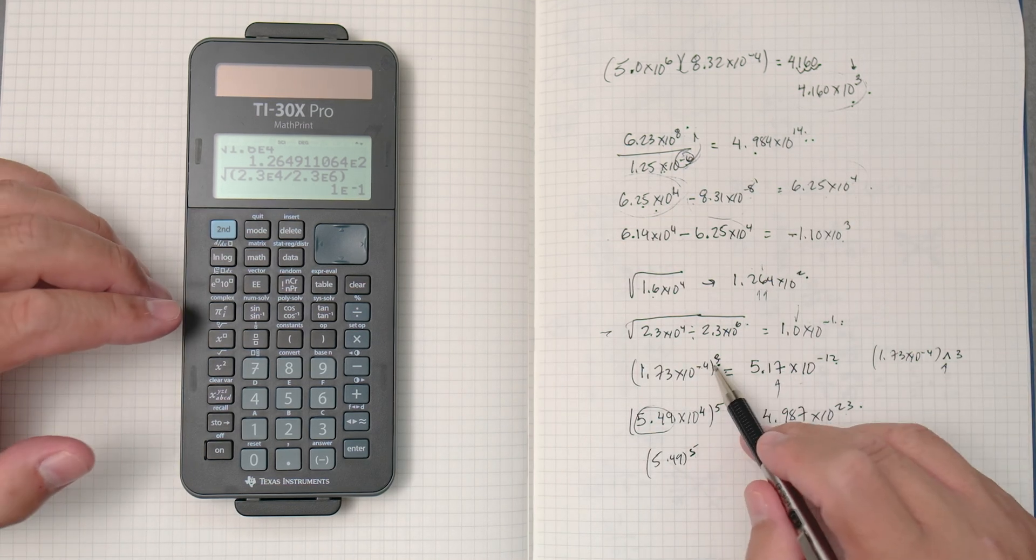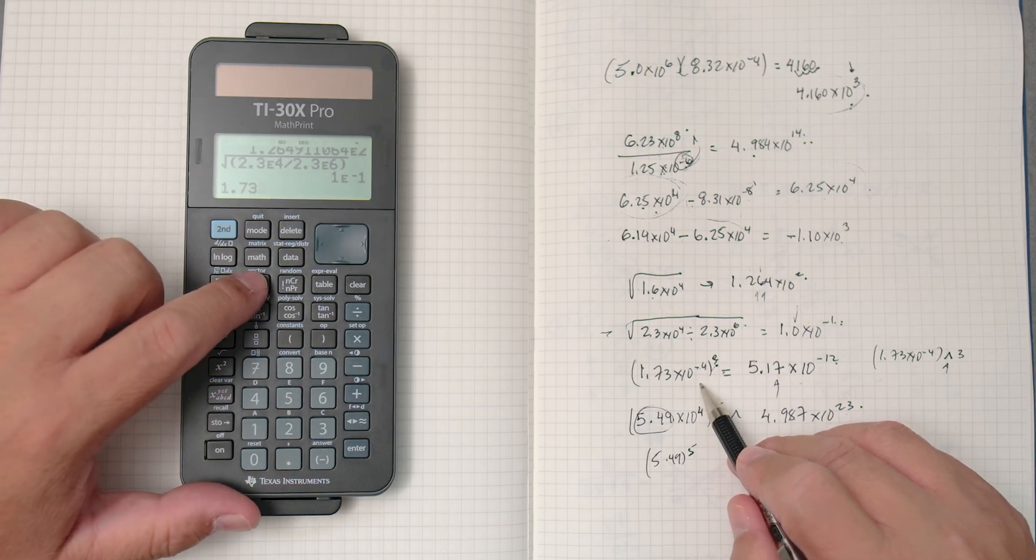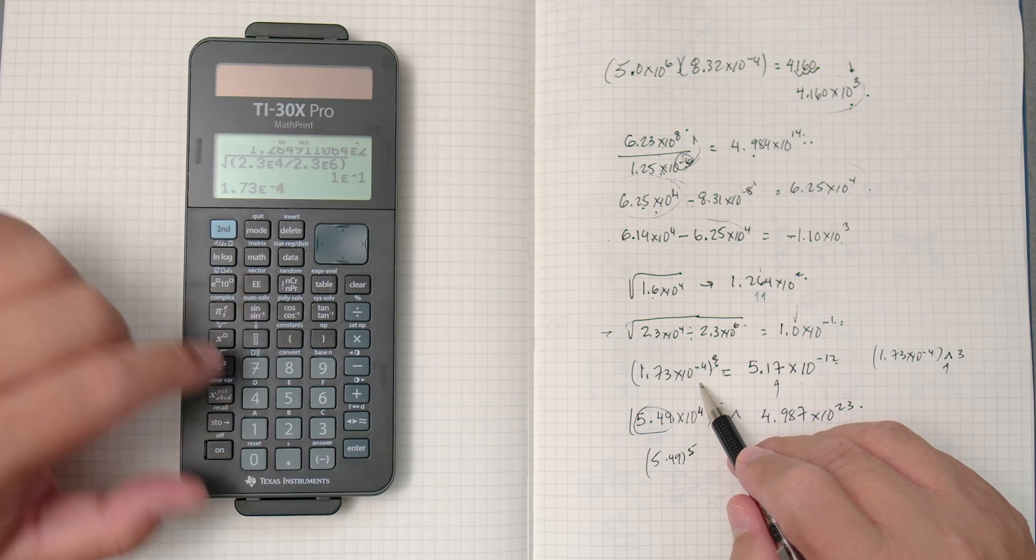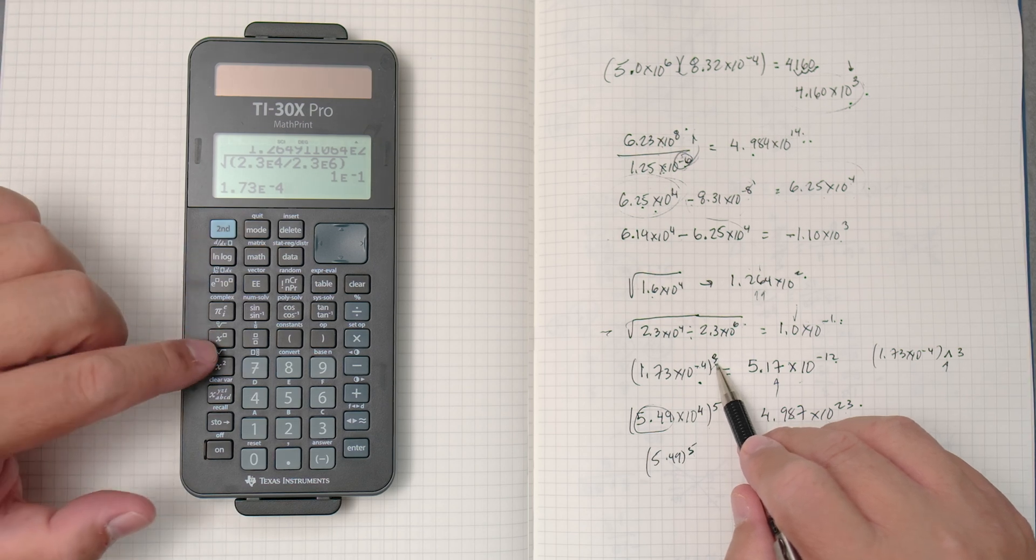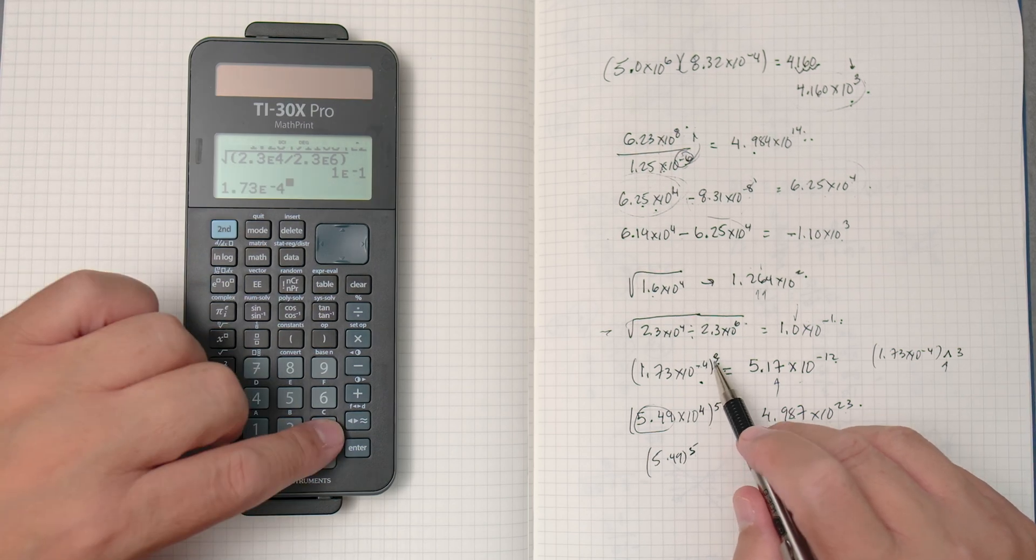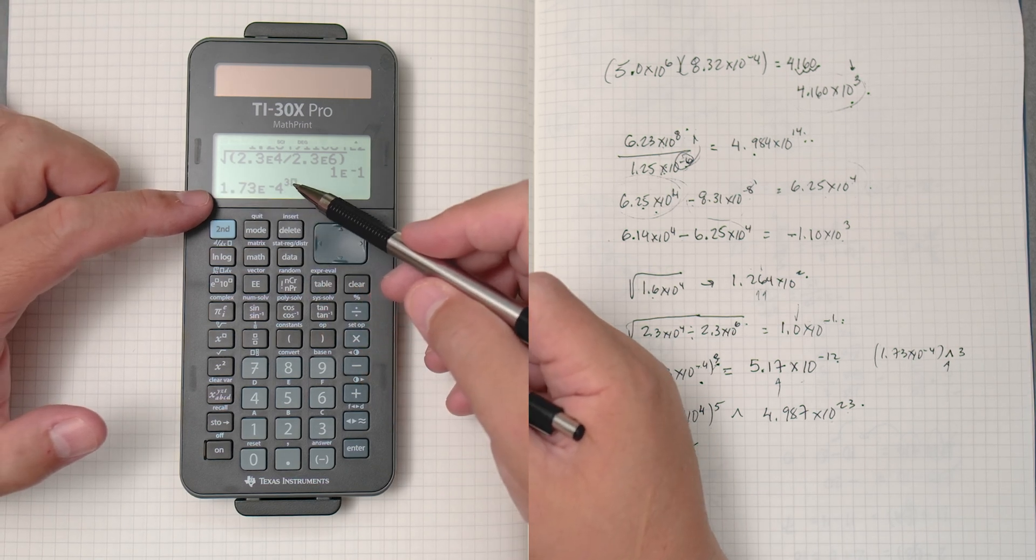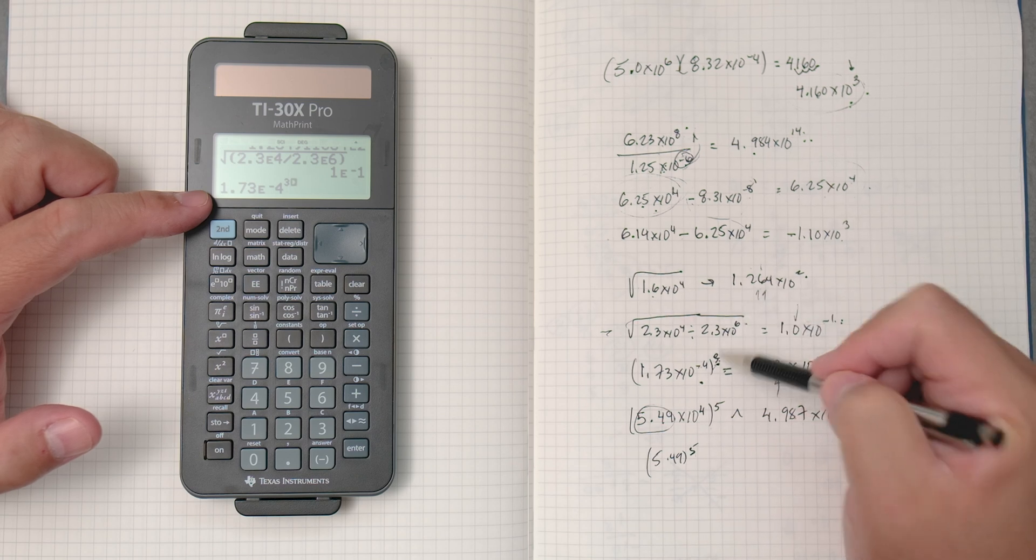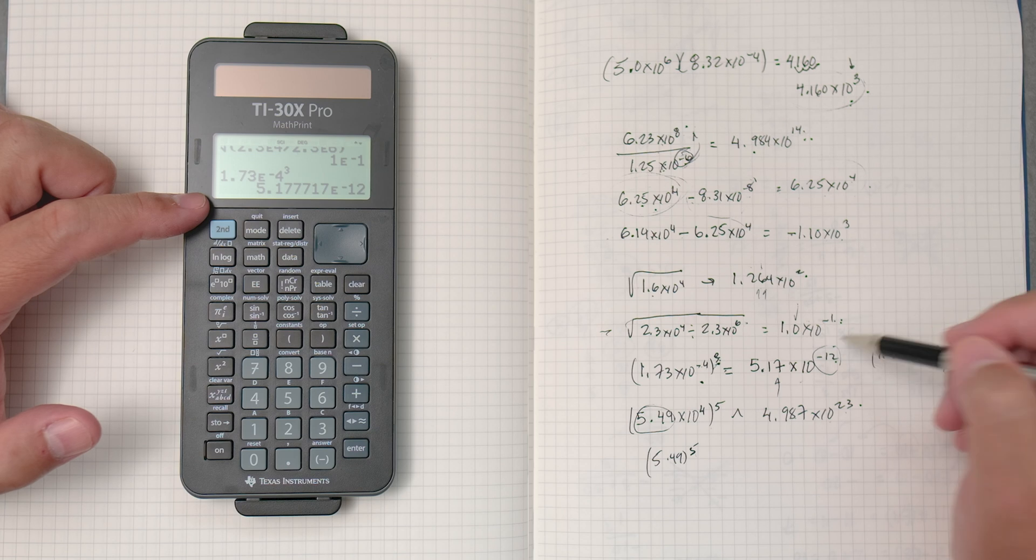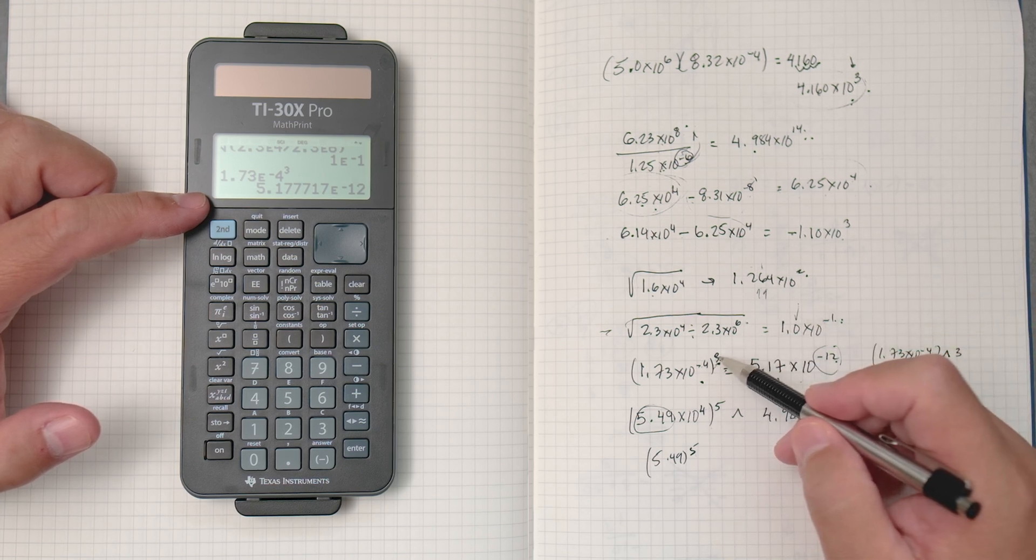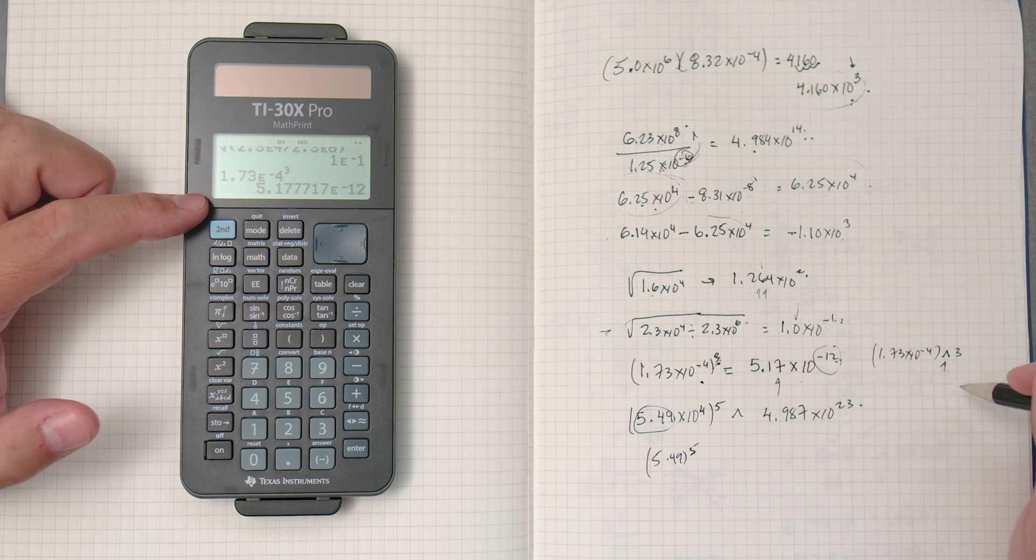Next one. We're going to do powers. 1.73 times 10 to the minus 4. And then to the power of 3. So, we're going to press this button here to the power of 3. You could put parentheses if you like, but you can see that the notation gives it that it goes to the power of 3. Enter. 5.17 times 10 to the minus 12. So, 4 times 3 is 12, or negative 4 times 3 is negative 12. That's why it's negative 12.